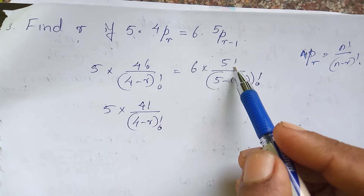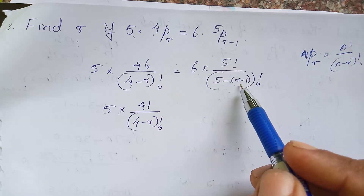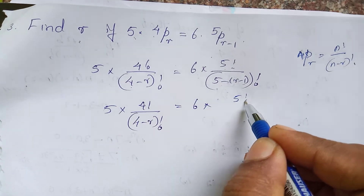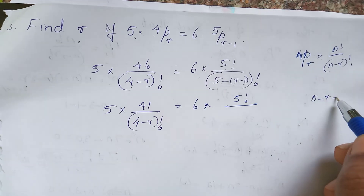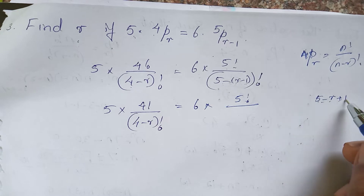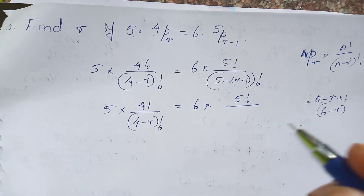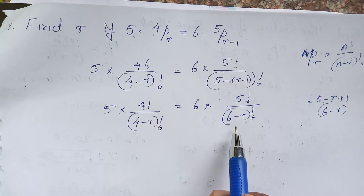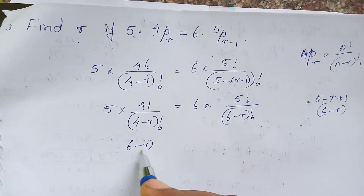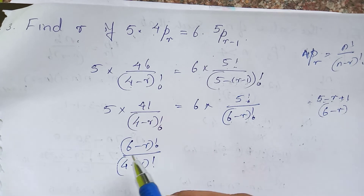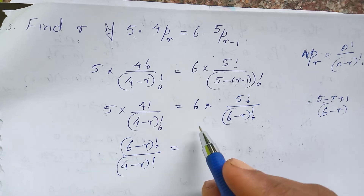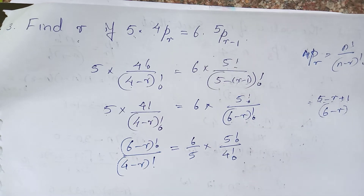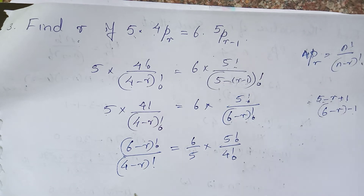This is equal to 6 into 5 factorial by (5 minus r) factorial. Expanding further, this is equal to 6 minus r factorial by 4 minus r factorial. Then we get 6 into 5 factorial by n into 5 factorial, which gives us 4 factorial by 4 factorial.